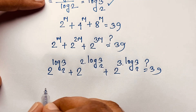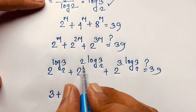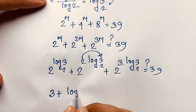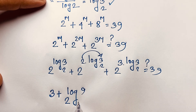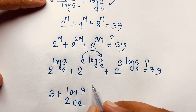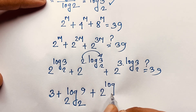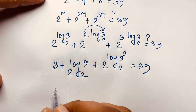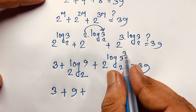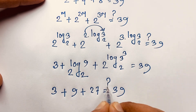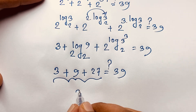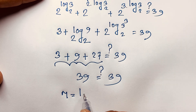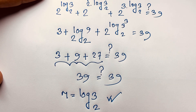So substituting these values: 2 to the power log-base-2 of 3 gives 3, then 3 squared gives 9, and 3 cubed gives 27. Adding them: 3 plus 9 plus 27 equals 39. Left-hand side equals right-hand side — both sides are equal. Therefore, m equals log base 2 of 3 is confirmed as our final answer to this tricky math problem.